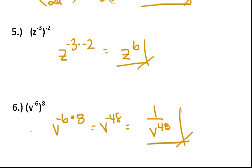So the power rule: you're simplifying numbers raised to a power raised to another power by multiplying those powers together. And in the case that you do have a negative exponent, you can get rid of it by simply placing it in the denominator under one. That's using the power rule and also negative exponents.